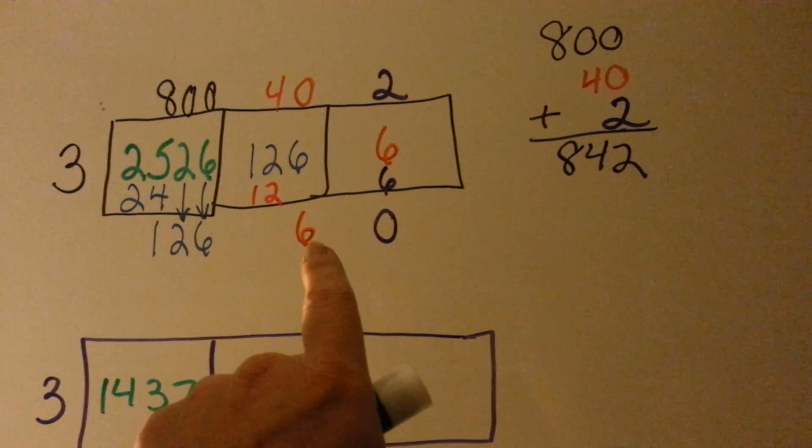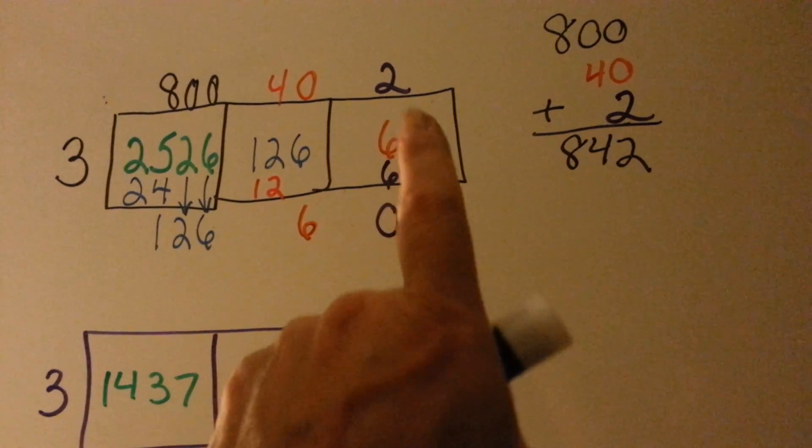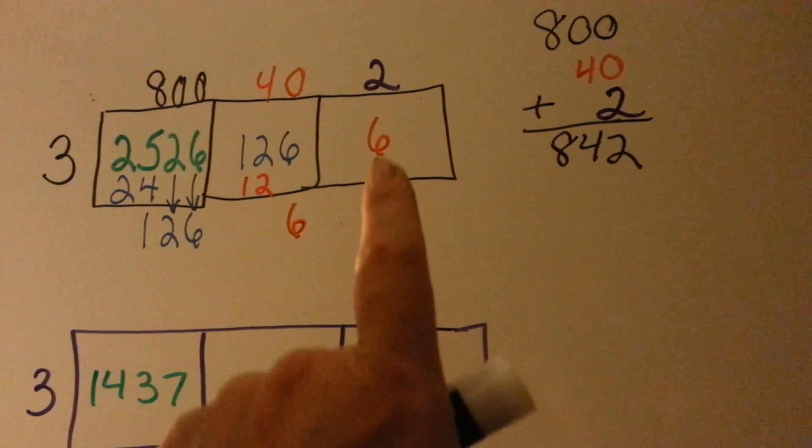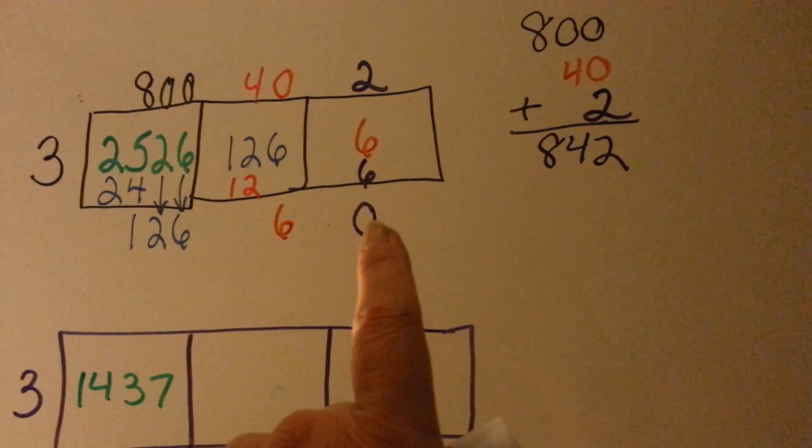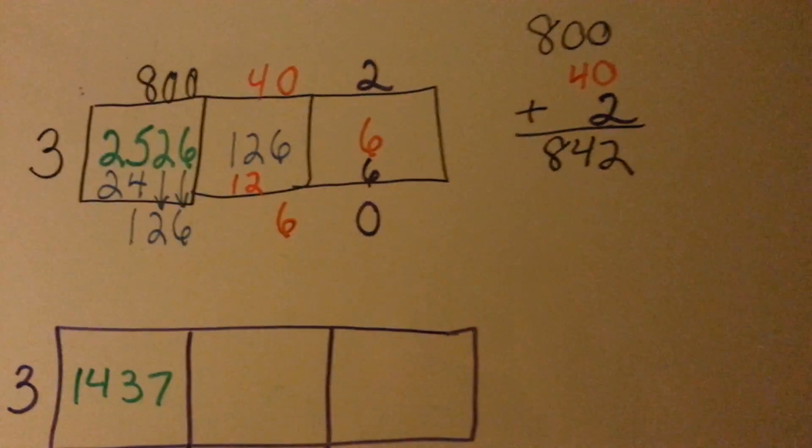We bring our 6 down that's left over, put it into the last box, and say, how many times can 3 go into 6? 2 times. We do our subtraction, and it's got 0 left over. We add our 800, our 40, and our 2, and we get 842.